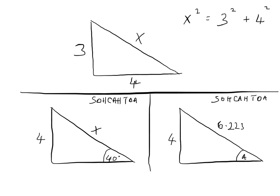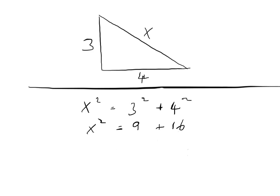The next thing I'm going to do is complete the solving of the first problem. We already found that x squared equals 3 squared plus 4 squared. If we work out the squares, we get 9 plus 16, so x squared equals 25. To find out what x equals, we square root both sides: the square root of x squared gives x, and the square root of 25 gives 5.